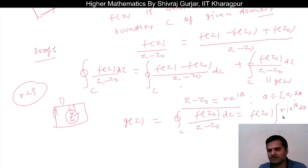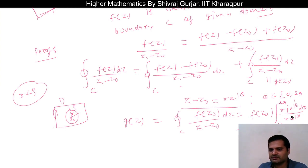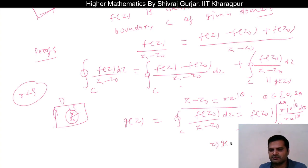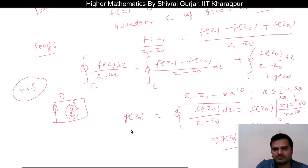So z minus z₀ = ε·e^(iθ), and dz = iε·e^(iθ)dθ. Here θ goes from 0 to 2π — basically we have parameterized it. So everything cancels out and we get iota times the integral from 0 to 2π dθ, giving 2πi·f(z₀), since f(z₀) is a constant.